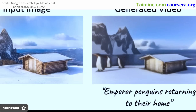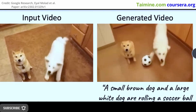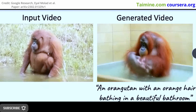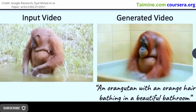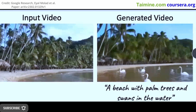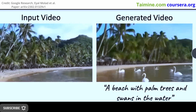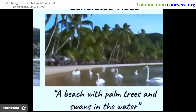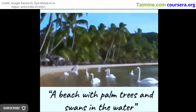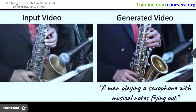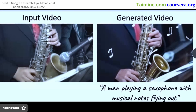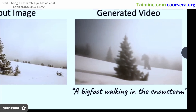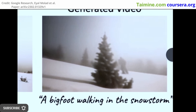To overcome a limited extent of motion change, the researchers incorporate a mixed objective, which includes the original objective along with fine-tuning on the unordered set of frames. The latter is achieved through the use of masked temporal attention, which prevents the fine-tuning of temporal attention and convolution. This approach enables Google to introduce motion into a static video.